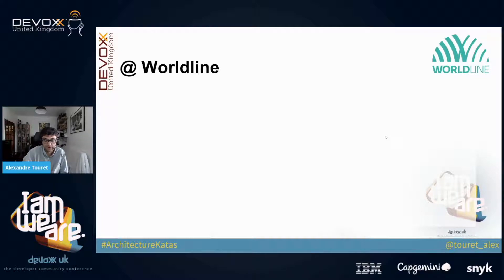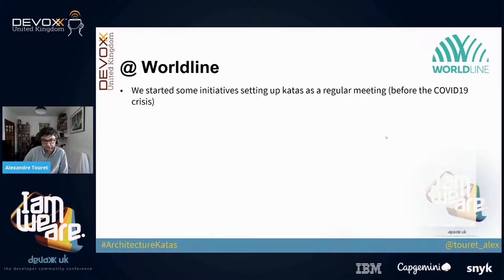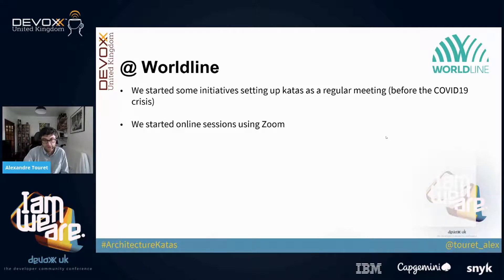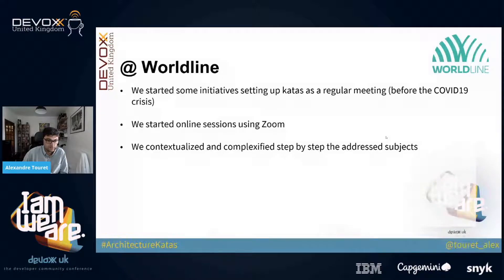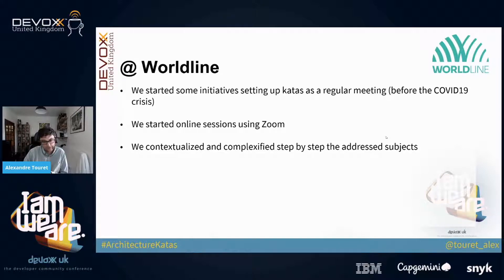So what about at Worldline? At Worldline, we started a kata initiative as a regular meeting before the COVID-19 crisis. We started some sessions using Zoom during the crisis — it worked, though it's harder than real-life meetings. We contextualized and progressively increased the complexity of the subjects, starting with easy ones and moving to more complex ones, including existing application use cases.